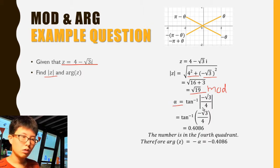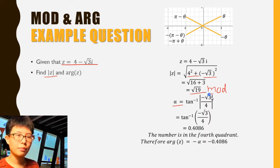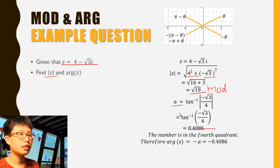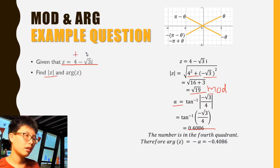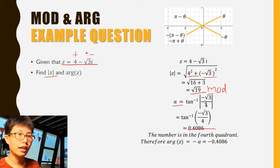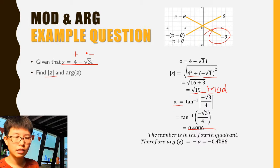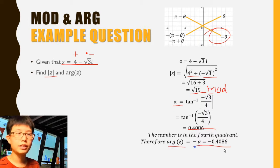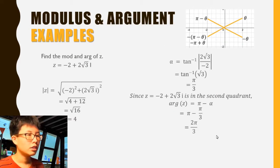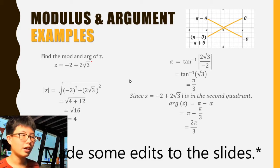For the argument, I calculate alpha first. Alpha is tangent inverse of |y| over |x| — here y is negative but the modulus handles that. Since x is positive and y is negative, the number is in the fourth quadrant. So we take the negative version: argument = −0.486 radians.